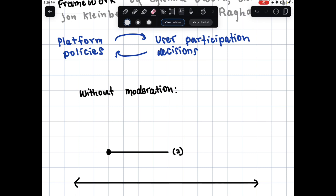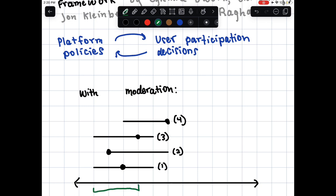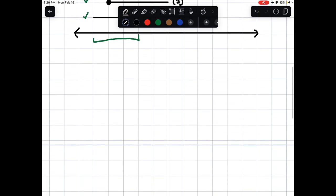On the other hand, suppose the platform were willing to set a content moderation policy. Then, by removing 4, it could ensure that the remaining 3 people are all happy to stay for any order in which they make their decisions. We can think of this as a pragmatic argument for moderation. Without it, the platform will hollow out. We could use a similar type of argument to show how moderation might increase diversity of speech on platforms.